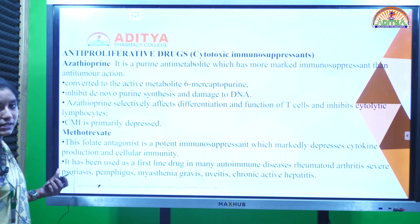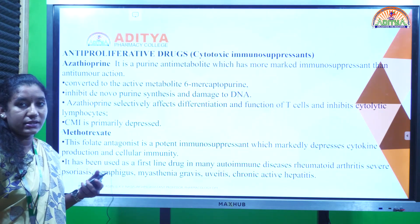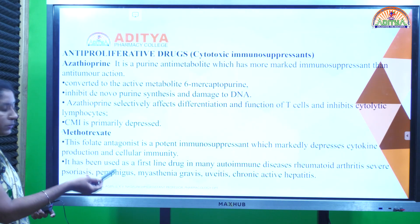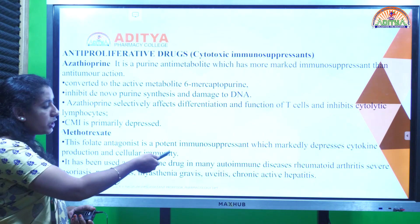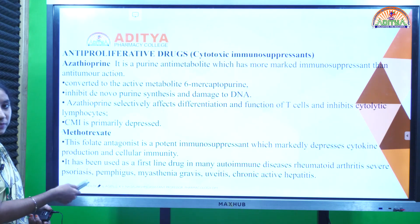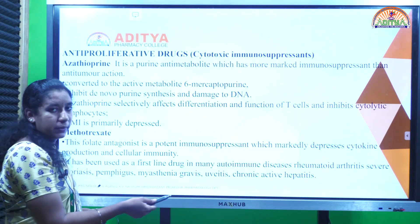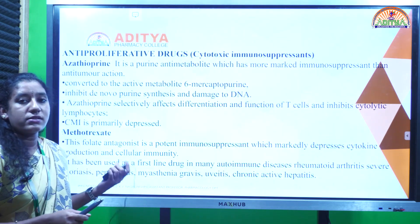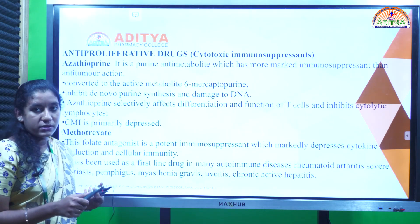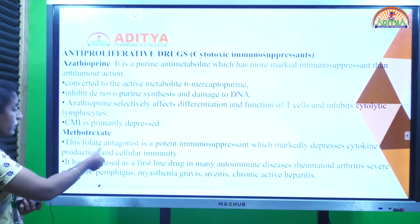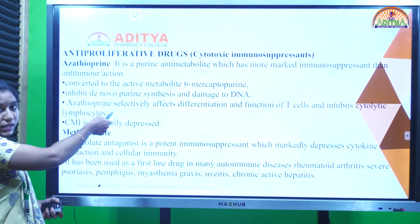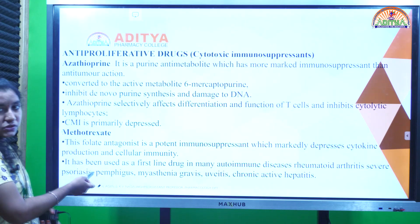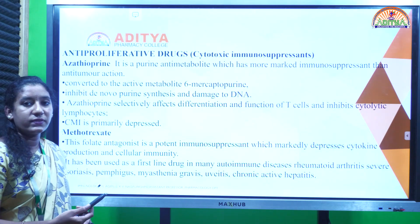Next is methotrexate, a folate antagonist also used as an anti-cancer agent. It mainly depresses cytokine production and cellular immunity. It is the first-line drug in various autoimmune disorders like rheumatoid arthritis, psoriasis, pemphigus, myasthenia gravis, uveitis, and chronic active hepatitis. Same as azathioprine, it shows action on cell-mediated immunity rather than humoral immunity.